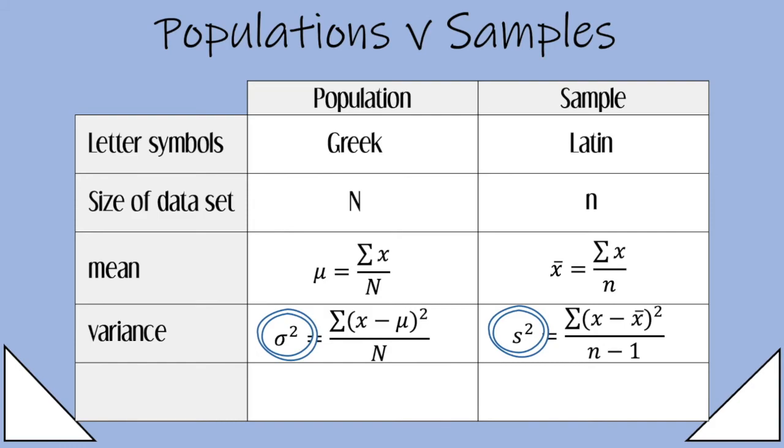To control for the smaller sample size, the denominator for the sample is n minus 1.